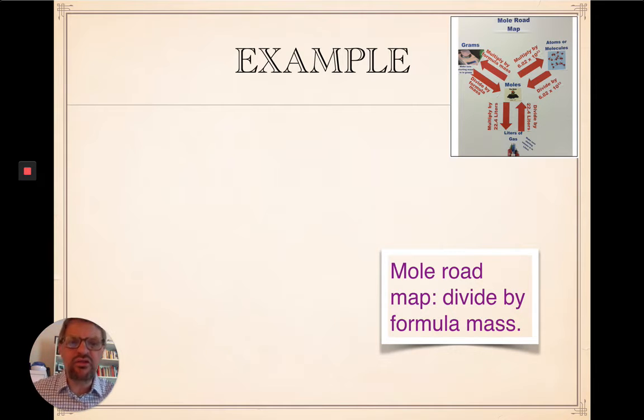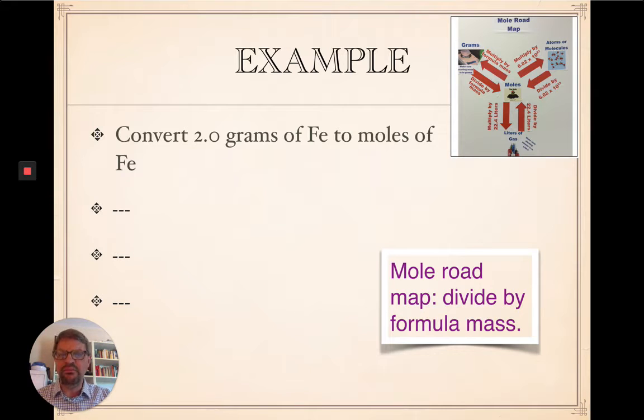Okay, so the first example, and we have six. First example, we have two grams of iron. How many moles would that be? So mole roadmap, as you can see here, divide by formula mass. We're starting in grams, and if you look in the upper right there, opposite my face, up there is your mole roadmap. We're starting in grams, two grams of iron, and we want to make it moles. So follow the arrow, divide by formula mass.